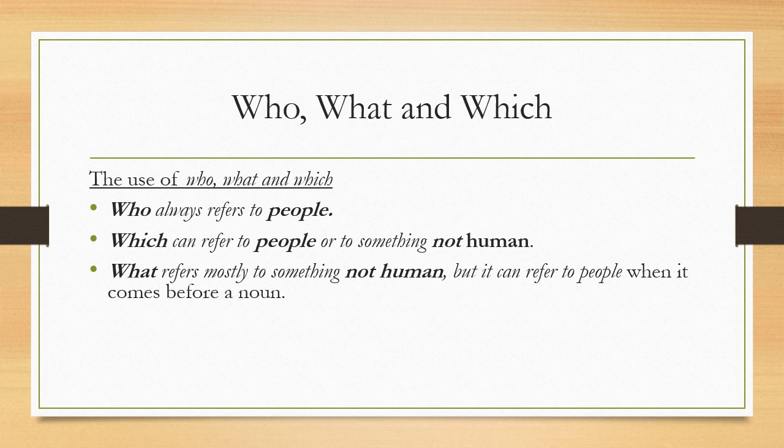Now let's come to understand the WH words and how questions are formed. There are many WH words used to form questions, of which the most common are who, what, and which. There is a little bit of confusion among students about when to use who, what, or which. Who always refers to people. Which can refer to people or to something not human. Whereas what refers mostly to something not human, but it can refer to people when it comes before a noun.